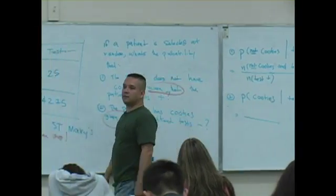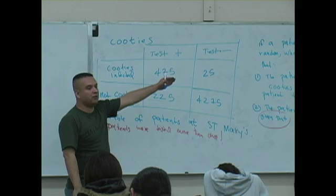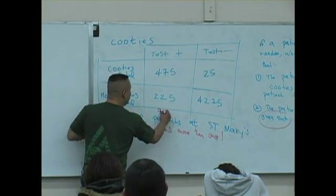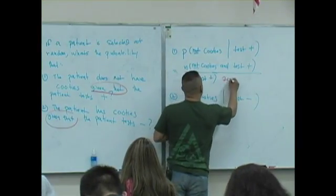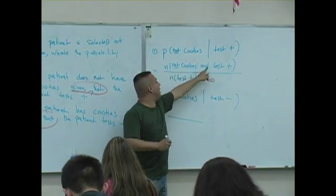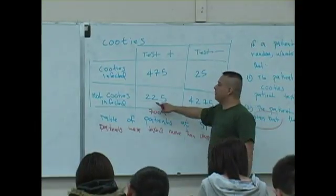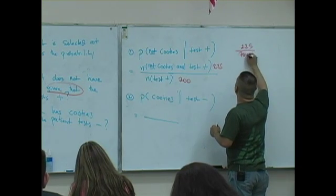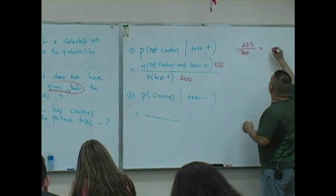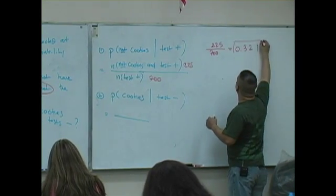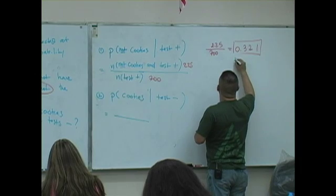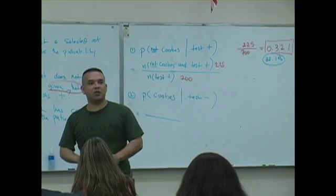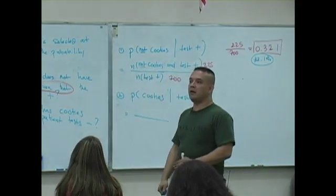Take a look at the chart. How many people tested positive? 700 people tested positive — that goes in the bottom. How many of the 700 people that tested positive didn't have cooties? 225. So 225 divided by 700. What is that as a decimal? 0.321. If we approximate to the nearest thousandths, it's 0.321. As a percent, that's 32.1%. The condition is that the patient has tested positive for cooties.